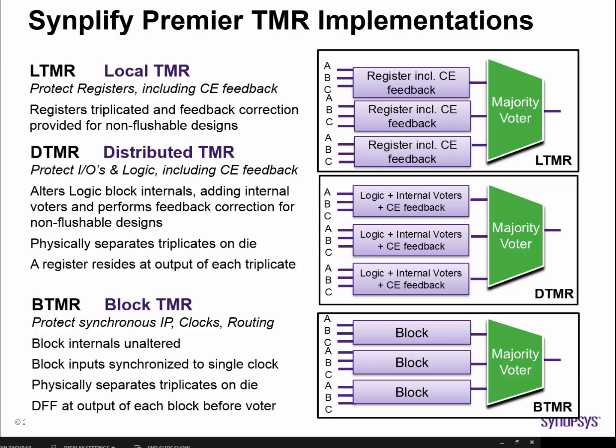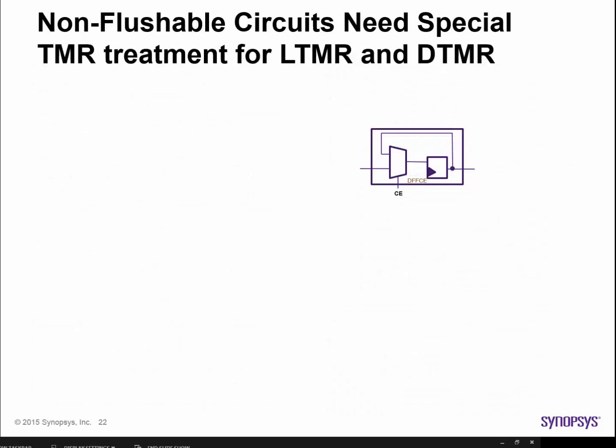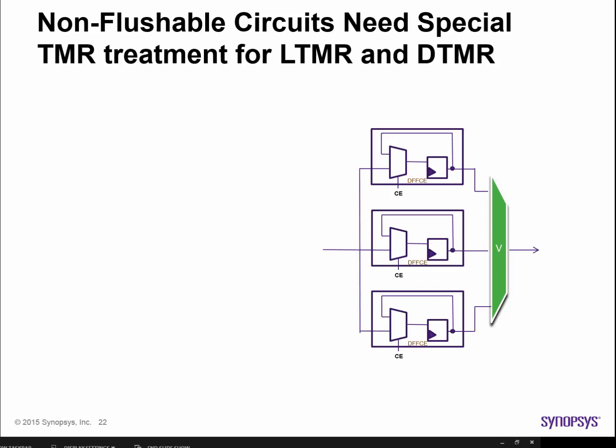I'll elaborate on each of these different types of TMR later in the video. However, some circuits that you are wanting to apply TMR to include synchronous feedback. Here's an example of a register with feedback. You'll note that the feedback loop and the regular input to the register are gated by a clock enable. After TMR circuitry is created, there's the possibility that an SEU error in any one of the triplicates will not flush out right away and instead be held a bit longer in the feedback loop of that triplicate where the SEU occurred. The error will be held up until a clock enable signal occurs, allowing the error to flush out. We call circuits with synchronous feedback non-flushable, because simple voter logic alone won't necessarily get rid of a single-bit error.